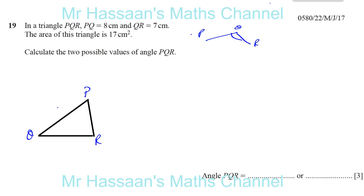So we've got P and Q and R. They told us that this is 8 centimeters. This is 7 centimeters. And the area of this triangle is 17 centimeters squared. Now, how can I link the area of a triangle? We don't know if it's the right angle. But I know that these two sides are 8 and 7. And I want to find the two possible values of the angle PQR. So I need to find this angle here. I know the two sides that make the angle. I know the area.